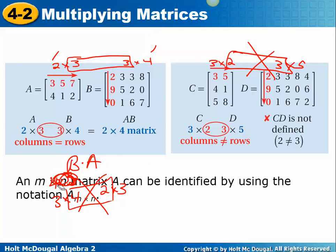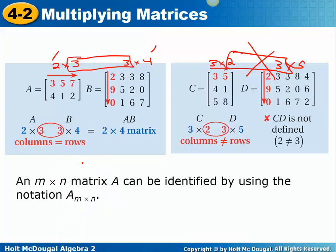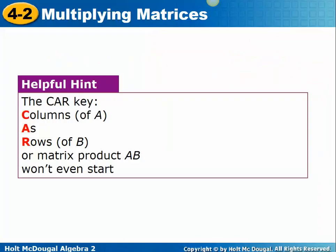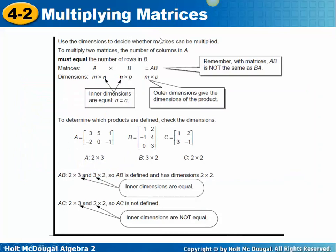Always check the dimensions before doing any work. An M by N matrix A can be identified using the notation A subscript M by N. Here's a mnemonic device to remember: CAR — Columns As Rows. The columns of A have to match the rows of B. If the columns-as-rows condition isn't the same, the matrix product AB won't even start — the CAR won't start.